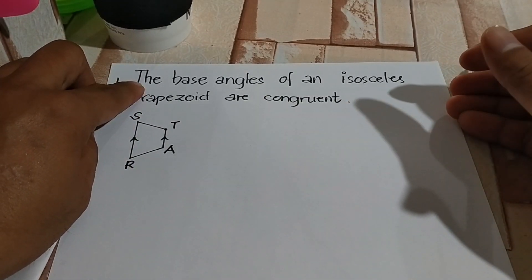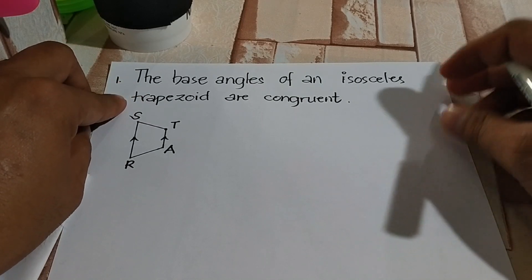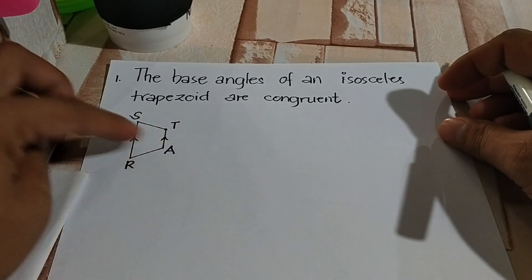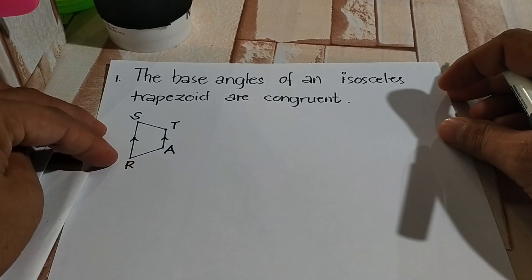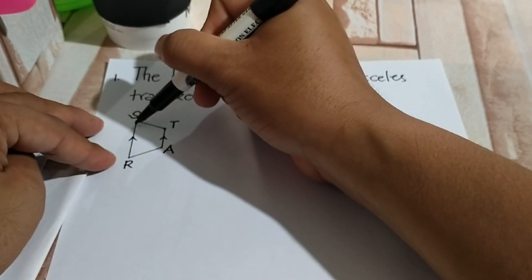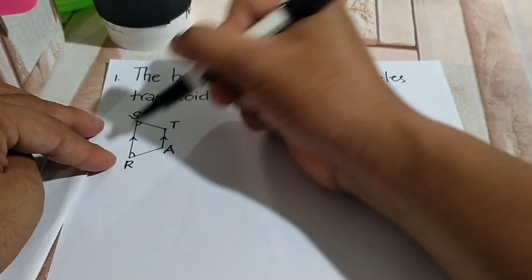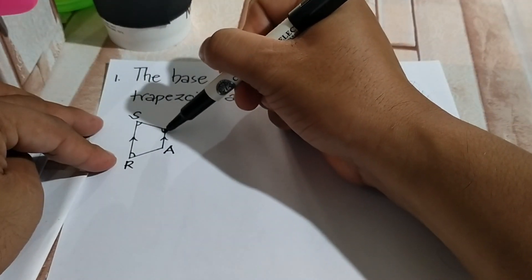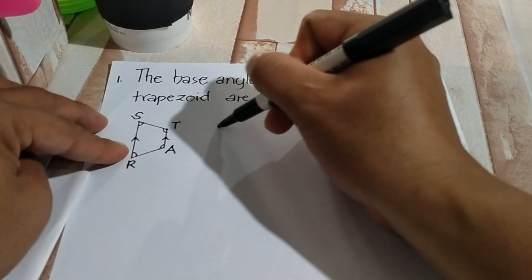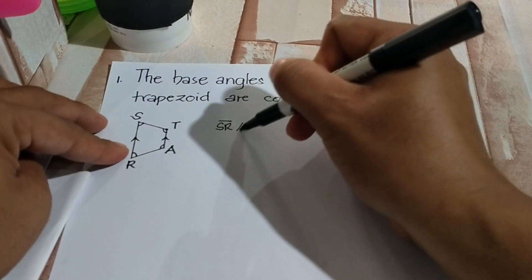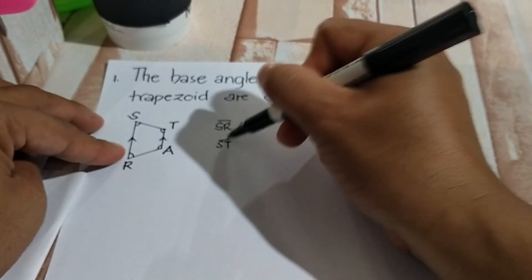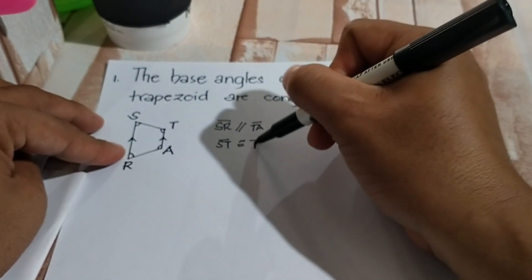Theorem number one states that the base angles of an isosceles trapezoid are congruent. Let's use this illustration — we have trapezoid STAR. Segment SR is parallel to segment TA, and segment ST is congruent to segment RA.